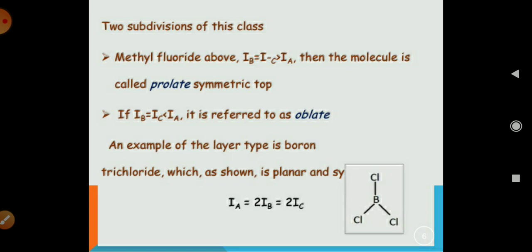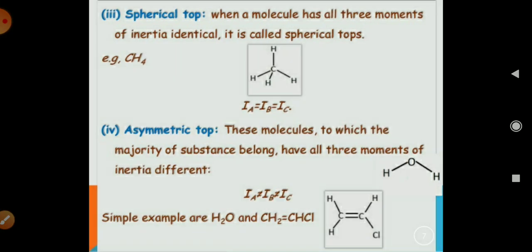And if Ib equals Ic and it is less than Ia, the molecule is referred to as oblate. Another example is boron trichloride, which is shown in this plane and symmetry of the compound here. In this compound, Ia equals 2Ib which equals 2Ic. So the value of Ia is less than Ib and Ic. So this kind of molecule is prolate.